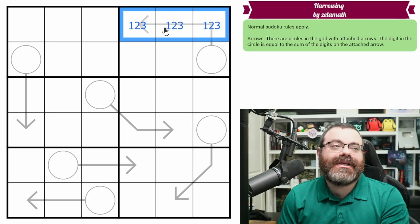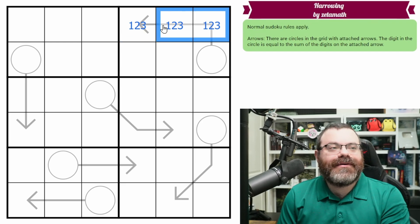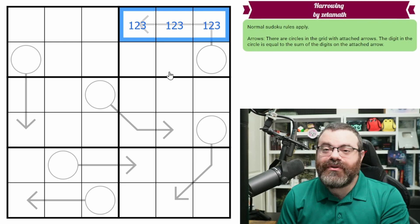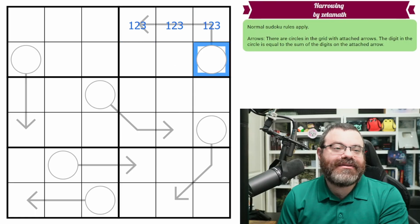And 3 digits, when we can't repeat like they're all in the same row, can be 1, 2, 3 at minimum, which adds to 6. And so this has to be 1, 2, 3 with a 6 here. This is 4, 5.